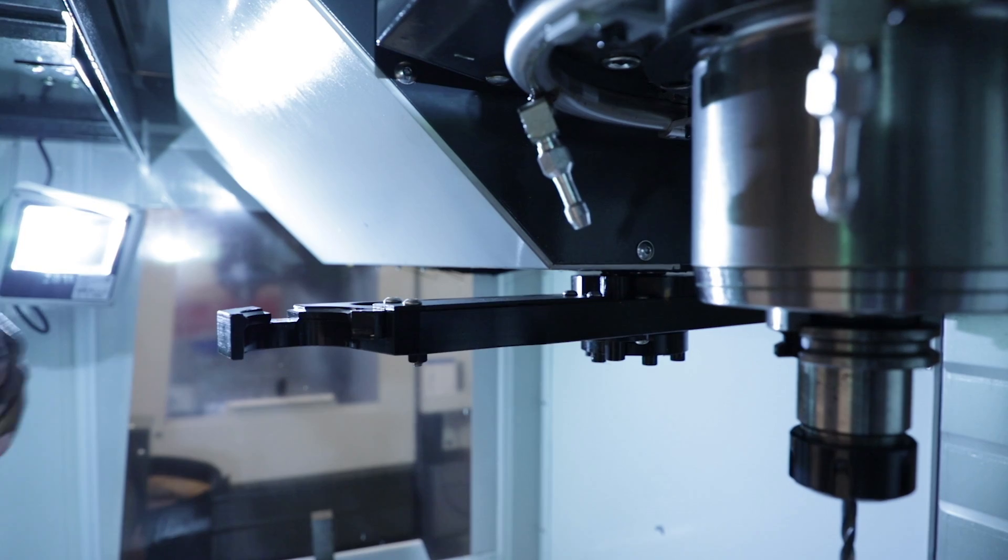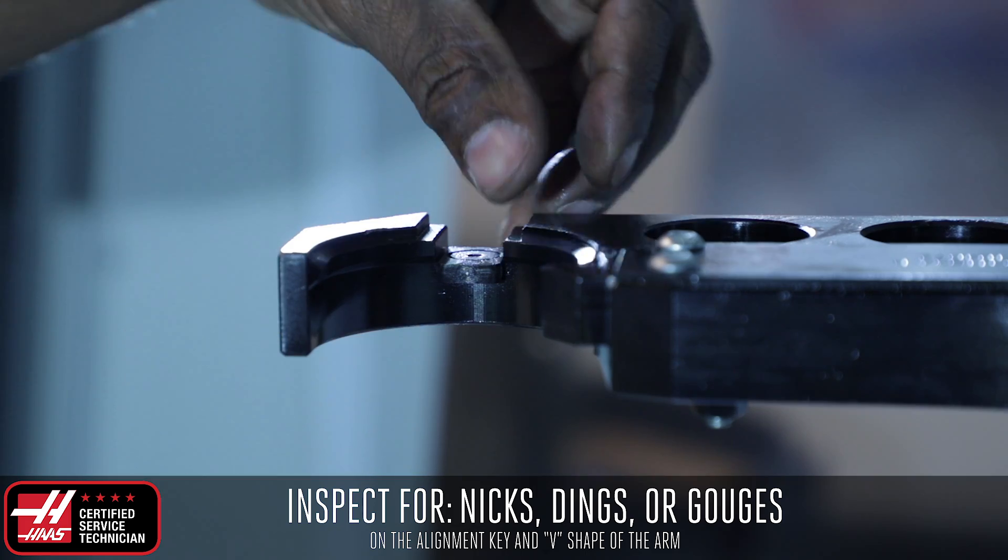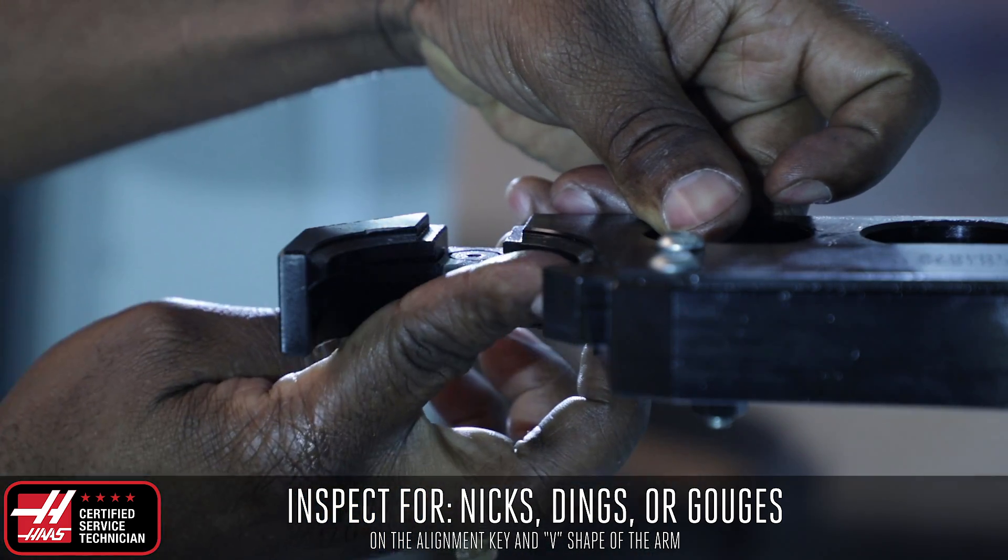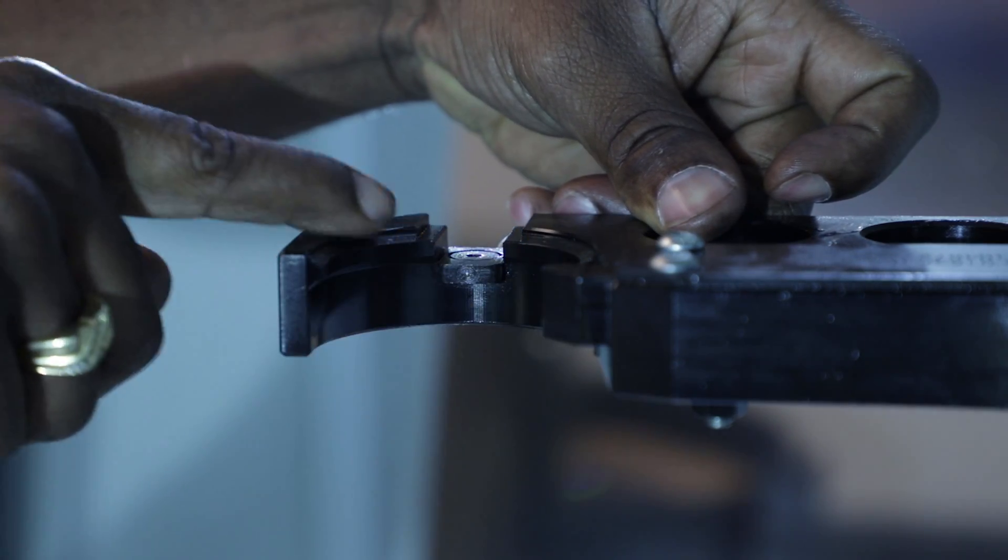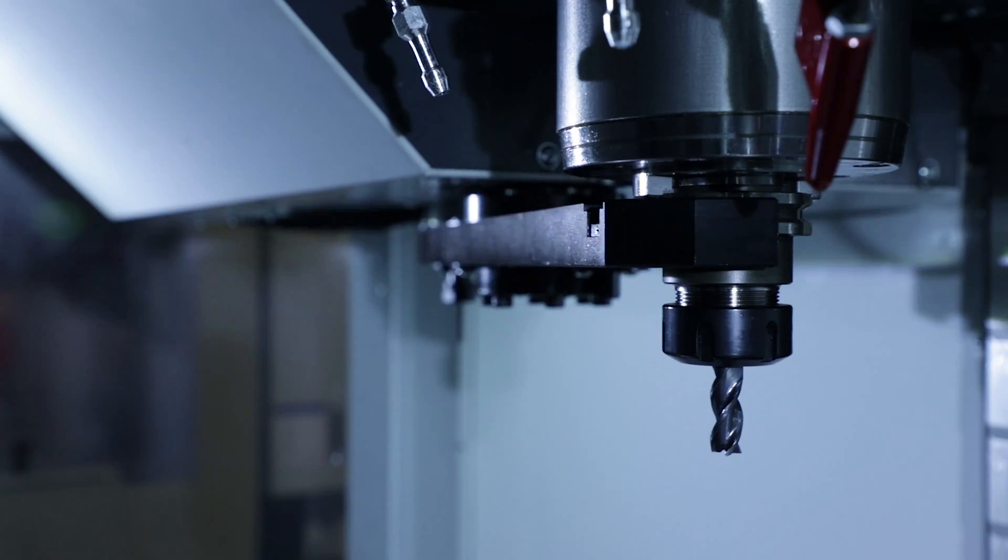Inspect the arms for dings, nicks and gouges on the alignment key and V shape of the arm. Any of these is an indication of misloaded tools, protruding set screw or poor tool changer alignment.